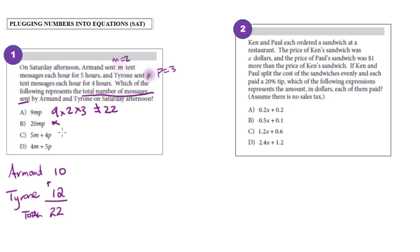5M plus 4P. Well, that would be five times two plus four times three, which is the same thing that I did before to find Armand and Tyrone's number of messages. So that would be 10 plus 12, which is 22. So therefore, my answer is C.